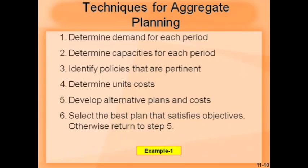Coming to techniques used for aggregate planning, there are two broad categories. One is trial and error — many things are subjective and you cannot fully optimize an aggregate plan this way; you try something, see if it works, and if it doesn't, modify the strategy. The second is developing mathematical models — using mathematical models to try to optimize.